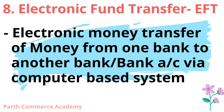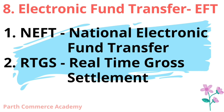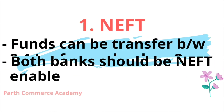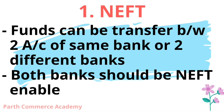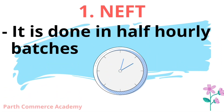Last one is electronic fund transfer. It is an electronic transfer of money from one bank to another bank or one account to another bank account via computer-based system, and it includes NEFT and RTGS. NEFT means National Electronic Fund Transfer and RTGS is Real-Time Gross Settlement. In NEFT, the funds are directly transferred from one account to another account. It removes the requirement of drawing or depositing checks. The funds can be transferred between two accounts of the same bank or two different banks — both banks should be NEFT enabled. It is done in half-yearly batches.